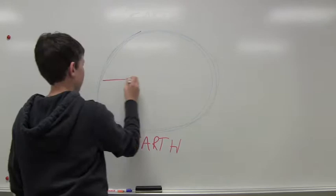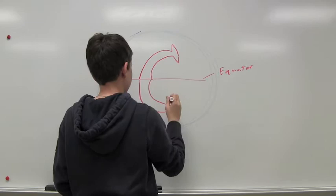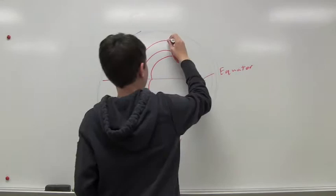The Coriolis effect. It causes water and air in the north to spin right and water in the south to spin left.